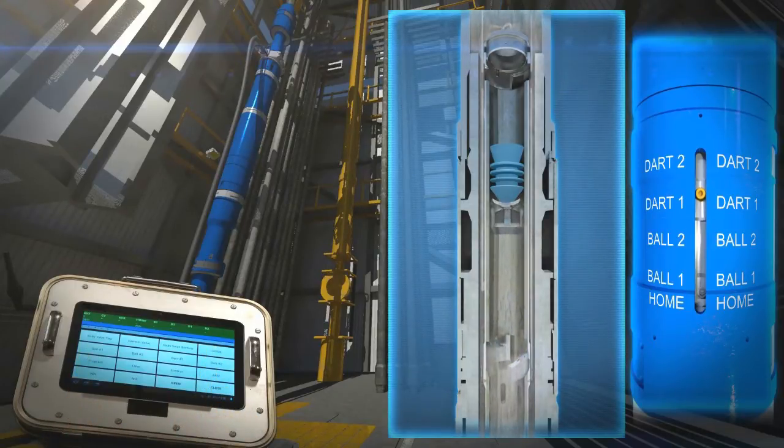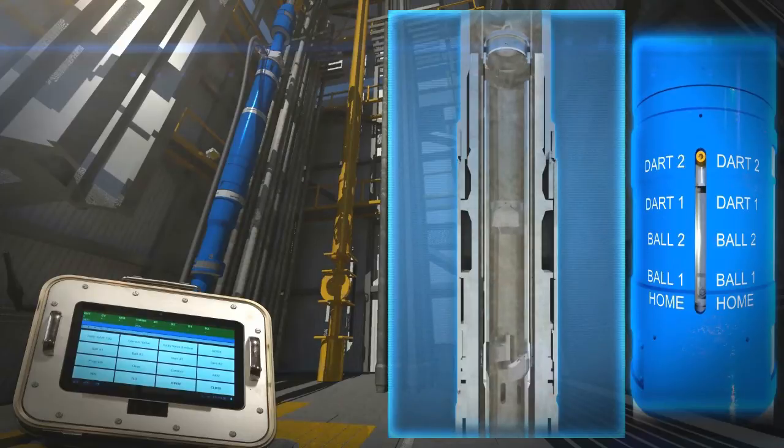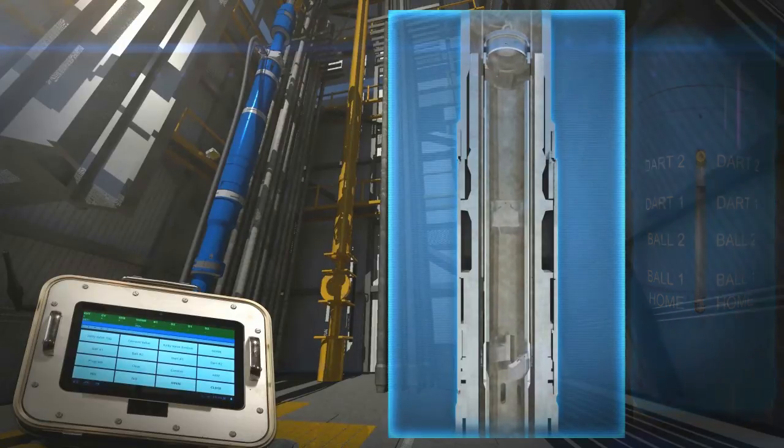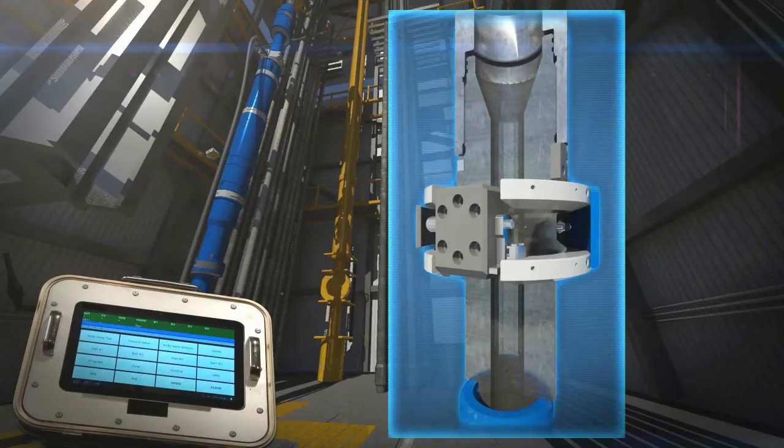As plugs and darts are launched, a variety of indications are given. First, notice that the sleeve indicator continues to move upward as each plug is launched. When a plug passes by the flag indicator on the cement head, the flag moves from a vertical to horizontal position.